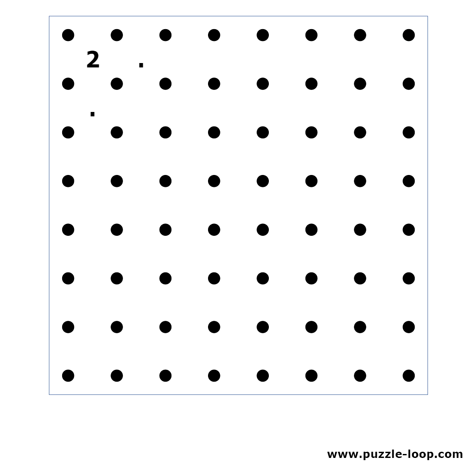This helps us define the next pattern. When we have a 2 in the corner and the cells next to it are empty, see the small dots, then we can place these lines.